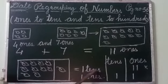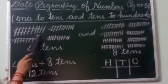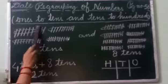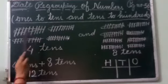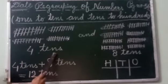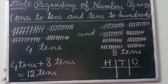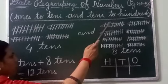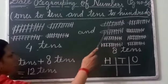Now we are going to learn how to regroup numbers from 10s to 100s. Here you can see in one group, 10 sticks are there. There are 4 groups, so we write 4 tens. And look at the other group — in each of those groups, 10 sticks are there as well, and there are 8 such groups, so we write 8 tens.